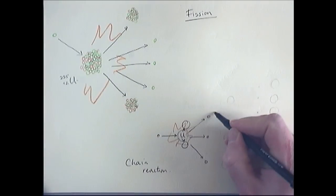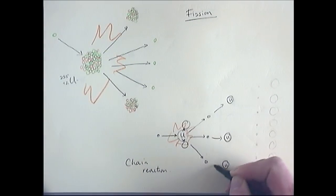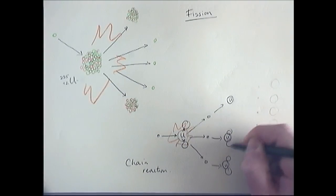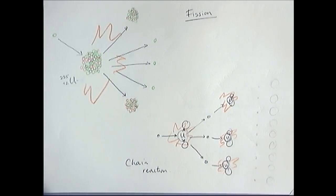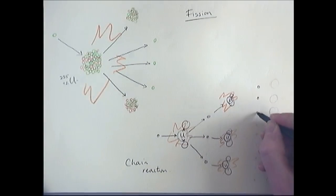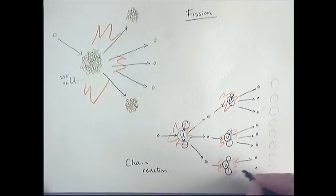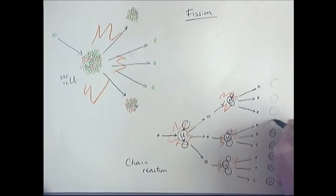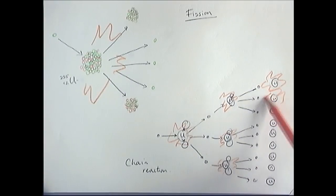Now those neutrons, they go on and are absorbed by other uraniums. Those uraniums split, energy is released, and other neutrons are released. Each of these neutrons are absorbed by other uraniums. They split, releasing energy. And you can see, they release the neutrons, and we've very quickly gone from one fission to nine fissions.